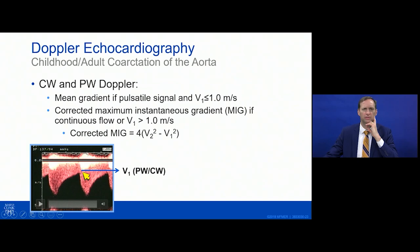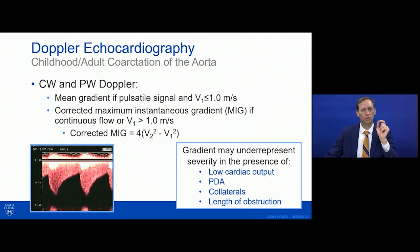With CW you can find V1 from the double-density signal and V2 at peak velocity. Keep in mind you can have an anatomically severe coarctation but calculate a disproportionately low gradient — due to low cardiac output with reduced stroke volume, a PDA or collateral arteries that bypass or supplement flow to the descending aorta, such that not all blood needs to cross the coarctation.